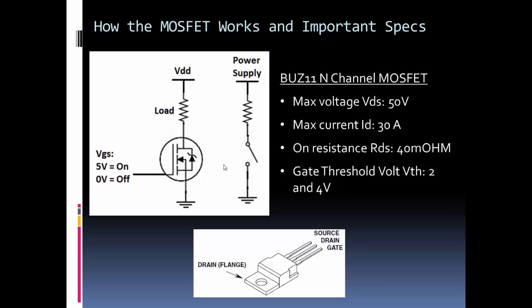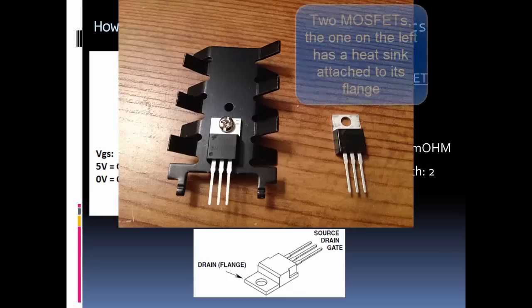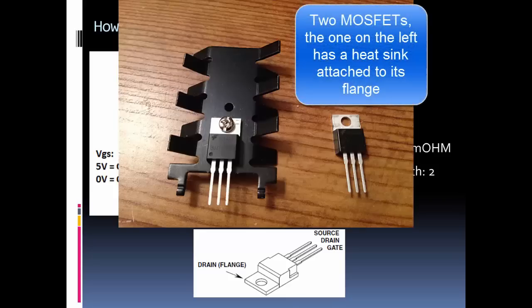When you're handling this, you have to be careful because that top part, you don't want to lean it against any metal because you'll get a short if you have any power on the drain. Basically what you would do is if you want to run a lot of current through it, you would attach a heat sink to that tab to dissipate the heat.